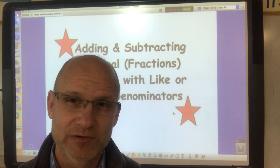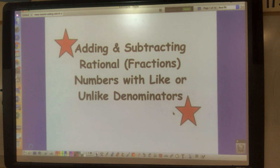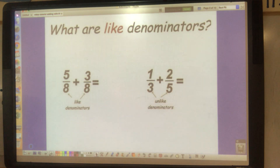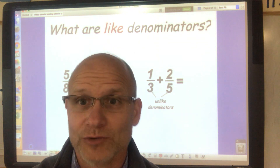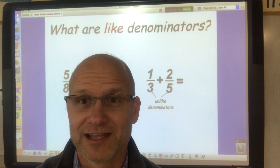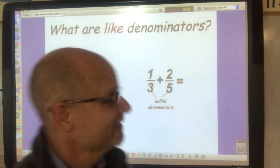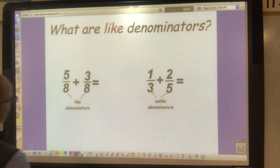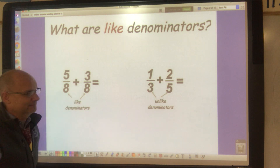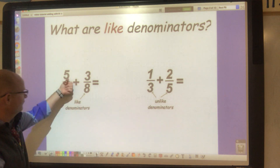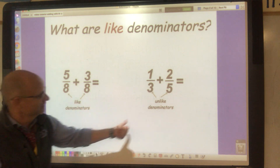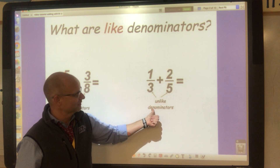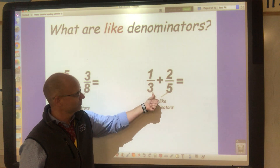Get out a pencil and piece of paper — let's take notes. The first thing is: what are like denominators? Like denominators are when the denominators are the same. For example, five-eighths and three-eighths have like denominators. One-third and two-fifths are called unlike denominators.